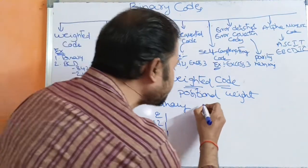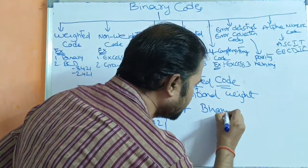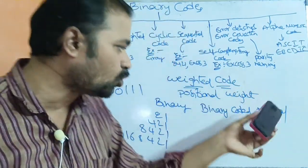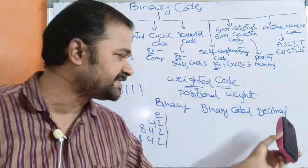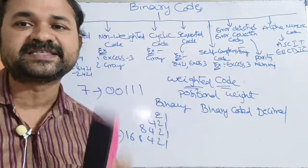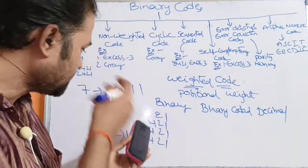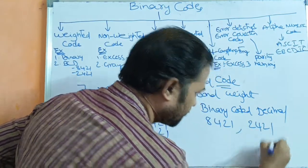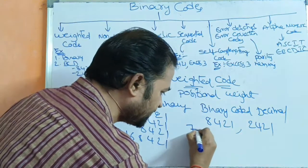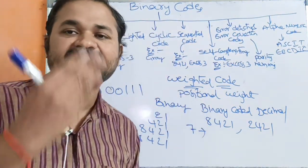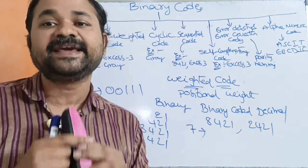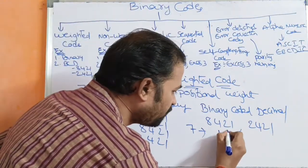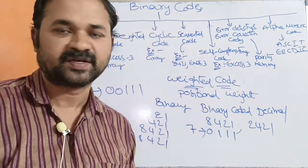The next one is BCD notation. BCD stands for binary coded decimal. A decimal number is represented in binary form using BCD notation. The best examples for BCD notation are 8421 and 2421. Let us take the number 7. Here the decimal digit 7 is represented with the help of 4 bits. Each decimal digit is represented by 4 bits. So 7 means sum of 4, 2, and 1. Simply we have to place 0 in the 8th position.